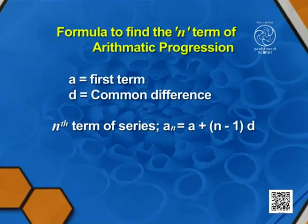If you observe this pattern, we can find the formula for the nth term. The nth term is A plus (n minus 1) times D. So friends, we got the formula to find the nth term of an arithmetic progression: if A is the first term and D is the common difference, then the nth term, A_n, equals A plus (n minus 1) times D. You can explore it for any nth term by taking different values of A and D.